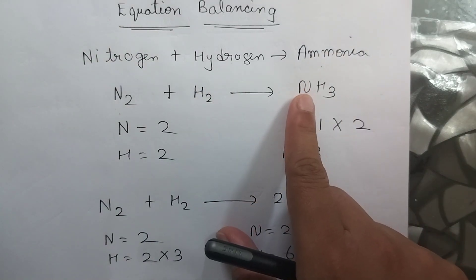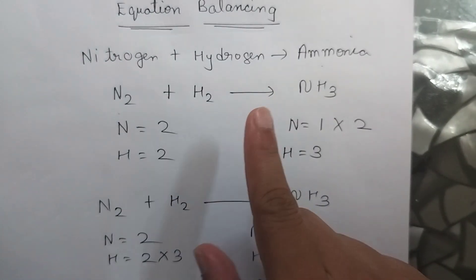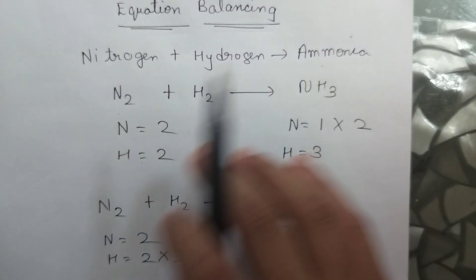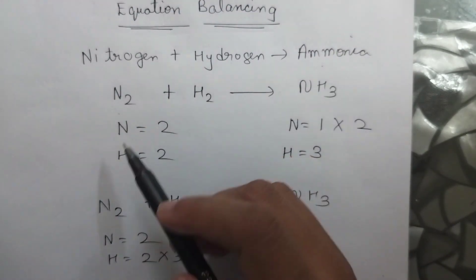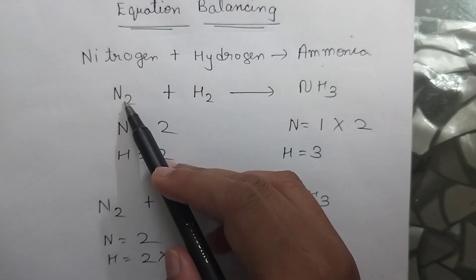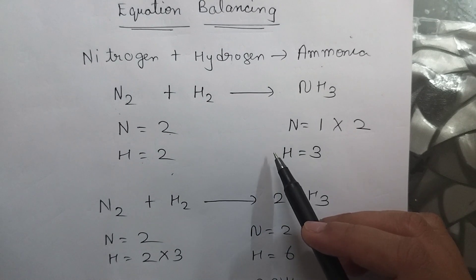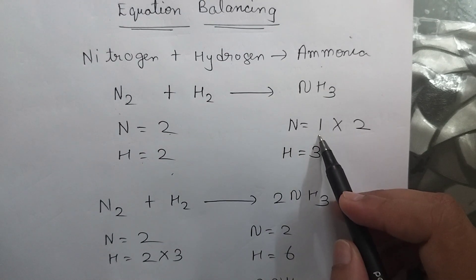The formula of ammonia you have to remember is NH3. So the first step before balancing it, write the number of species, reactants and products present on both the sides. Nitrogen over here is 2 as 2 is written over here. Similarly hydrogen is also 2. In the product side nitrogen is 1.